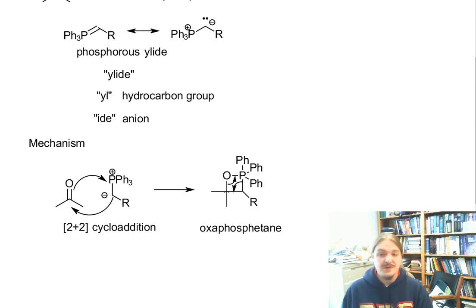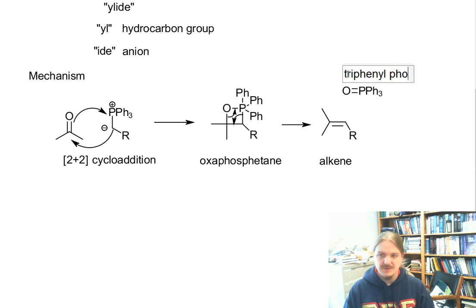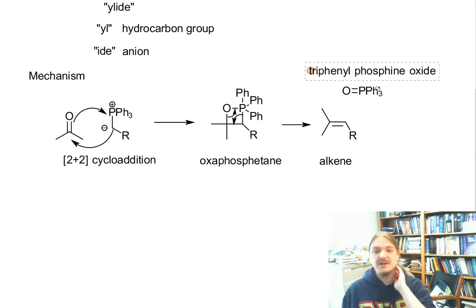And then this thing undergoes another pericyclic reaction, this time to come apart. The carbon-phosphorus bond is breaking, and those electrons are moving to become the new carbon-carbon pi bond. And the carbon-oxygen bond is breaking and is being used to form a new oxygen-phosphorus pi bond. So now I have an alkene. And then I have this triphenylphosphine oxide. Which is this other product up here. And the phosphorus-oxygen double bond is a really strong bond, so there's some thermodynamics here.